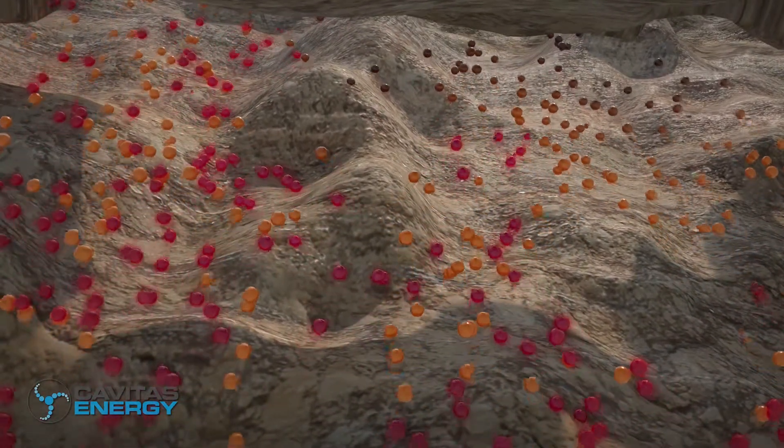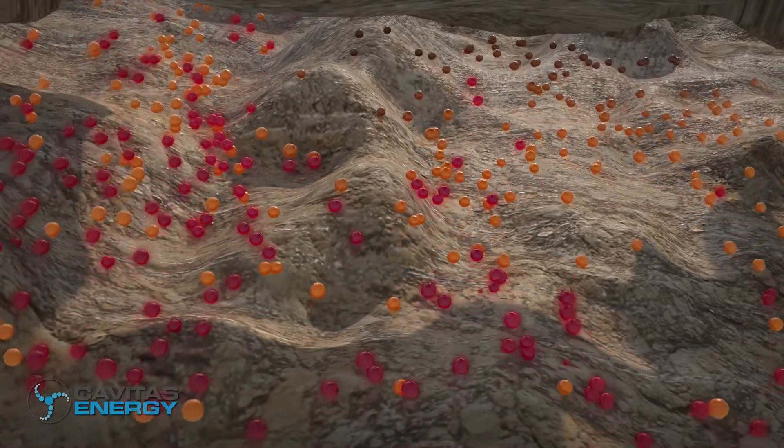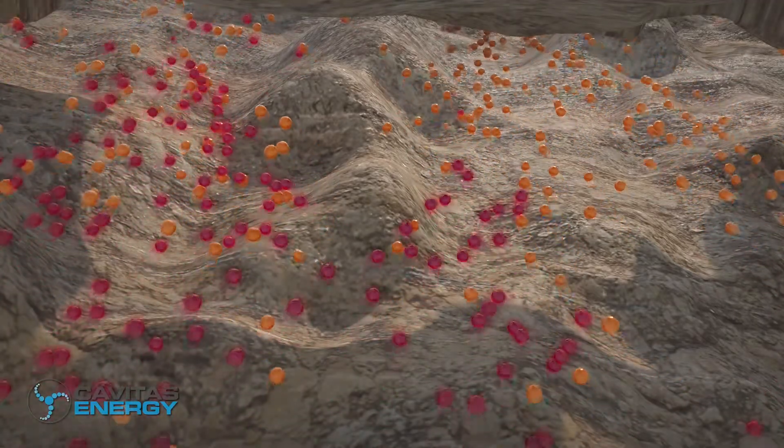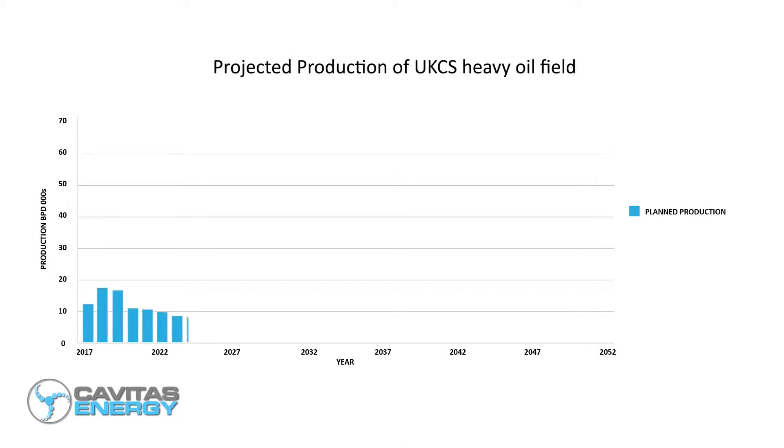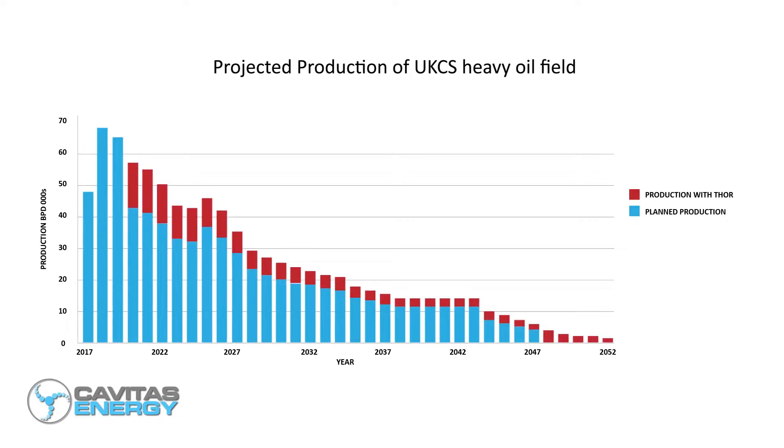Heated water lowers the in-situ oil's viscosity, increasing its mobility, combating viscous fingering and increasing oil production. Simulated results show THOR can increase recovery from heavy oil fields by as much as 16% and extend field production life by 9 years.